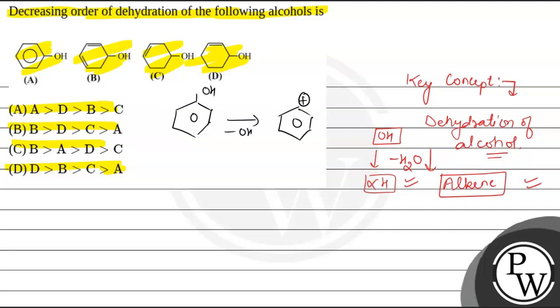Then the next option, B, is being given where we have the structure that is provided like this. So when we remove one OH unit from this, the corresponding cation is being formed like this.